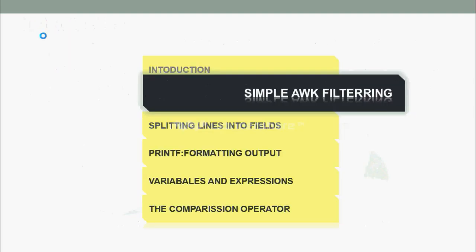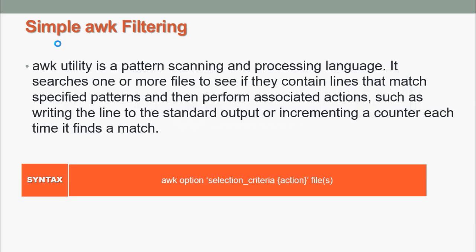Next, we are going to see simple AWK filtering. AWK utility is a pattern scanning and processing language, in which it searches one or more files to see if they contain lines that match specified patterns.